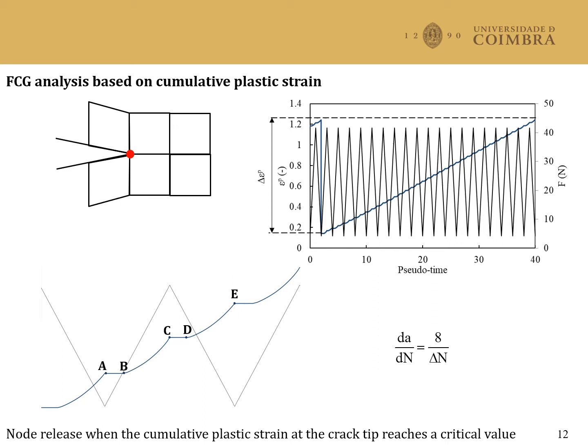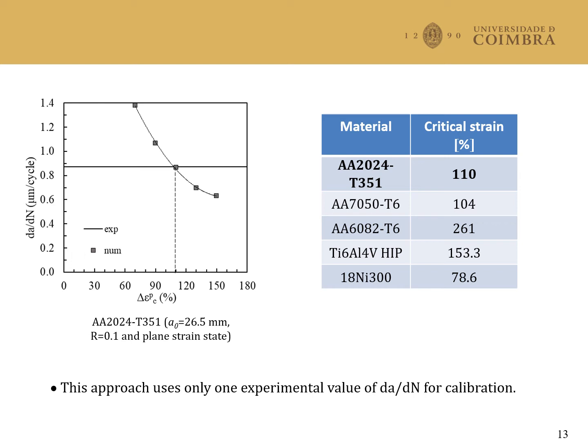The da/dN is defined by the ratio between the size of the finite elements, which is 8 microns, and the number of cycles required to reach the critical plastic strain. The critical value of cumulative plastic strain is obtained by considering one experimental value of da/dN, represented by the horizontal line in this plot. Several simulations are made with different values of critical cumulative plastic strain, and the intersection between the experimental and numerical curves gives the critical value that must be considered. For the material being studied, a critical strain of 110% was obtained.